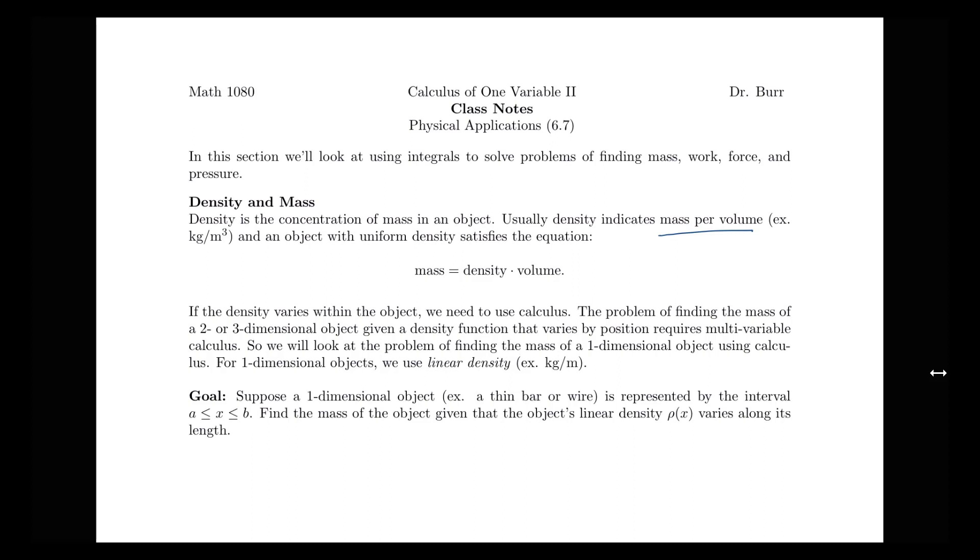An object with uniform density satisfies the equation mass equals density times volume. Thinking about our units, if we have a density that's kilograms per cubic meter and a volume that's in cubic meters, then we can see how our units cancel to give us appropriate units for mass. So that's one way to help you make sure you're always using the right formula, if your units cancel to give the units that you're expecting. So this is the formula here if we have an object with uniform density. That means the density is the same no matter the location in the object.